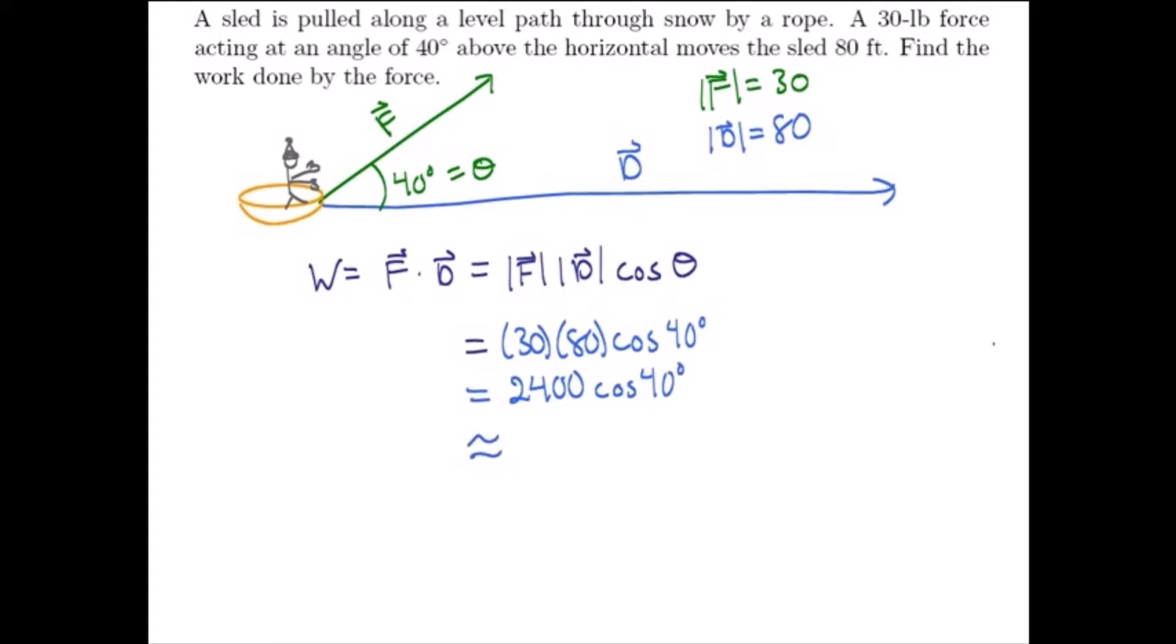And if we put that into our calculator and we'll round it off to the nearest foot pound, make sure your calculator is in degree mode, you're going to get a little bit over 1838 and a half, so we'll round it up to 1839. And again, the unit on that is going to be foot pounds, and that's because our distance was measured in feet, our force was measured in pounds. So the work is approximately 1839 foot pounds. That's a lot of work out there in the snow.